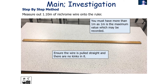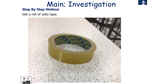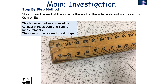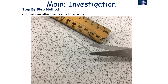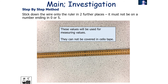Measure out 1.10 metres of nichrome wire onto the ruler — slightly more than one metre, as one metre is the maximum value we'll record. Ensure the wire is pulled straight with no kinks. Use sellotape to stick down each end of the wire, but do not stick it at 0, 5, 95, or 100 centimetres as those are measurement points. Cut the wire to the length of the ruler, then add two further pieces of tape to keep the wire static, again avoiding measurement values.